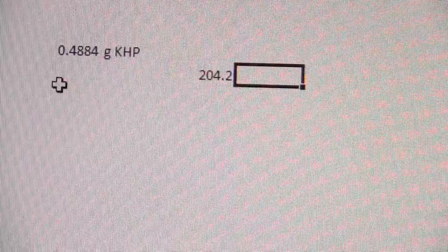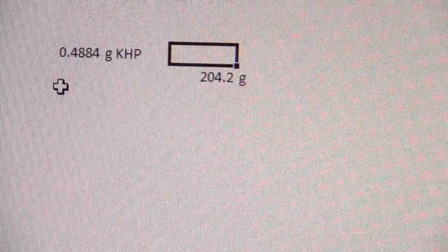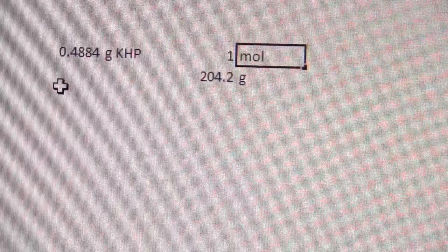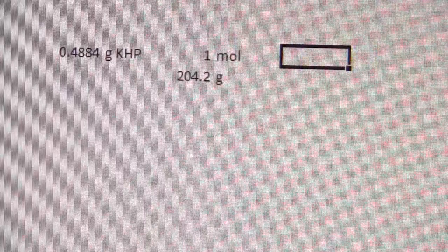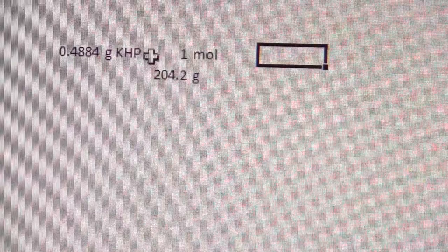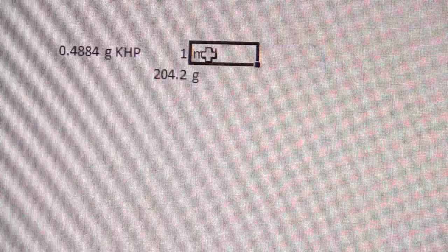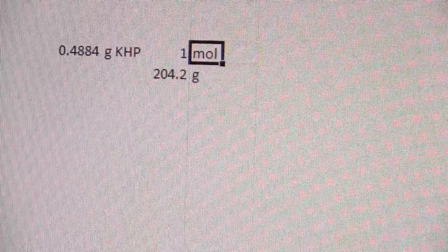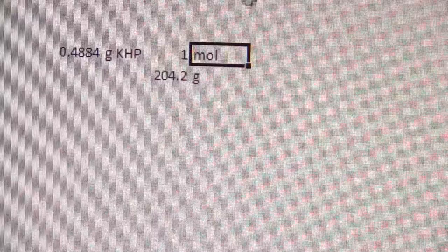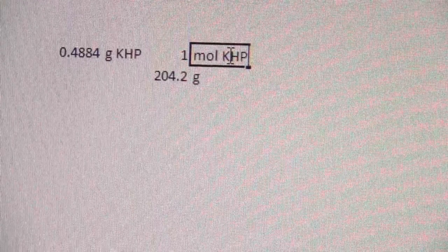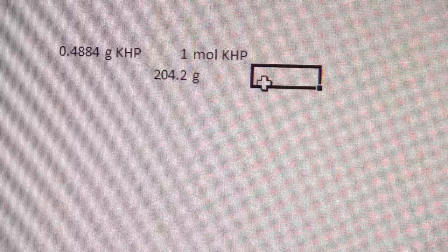All right, so what we're going to do now is convert this into moles. Okay, so the lab guide tells me that there are 204.2 grams per mole. So I'll set it up kind of like this. So I have 0.4884, now my grams will cancel, that'll give me moles. All right, so that's moles of the KHP.